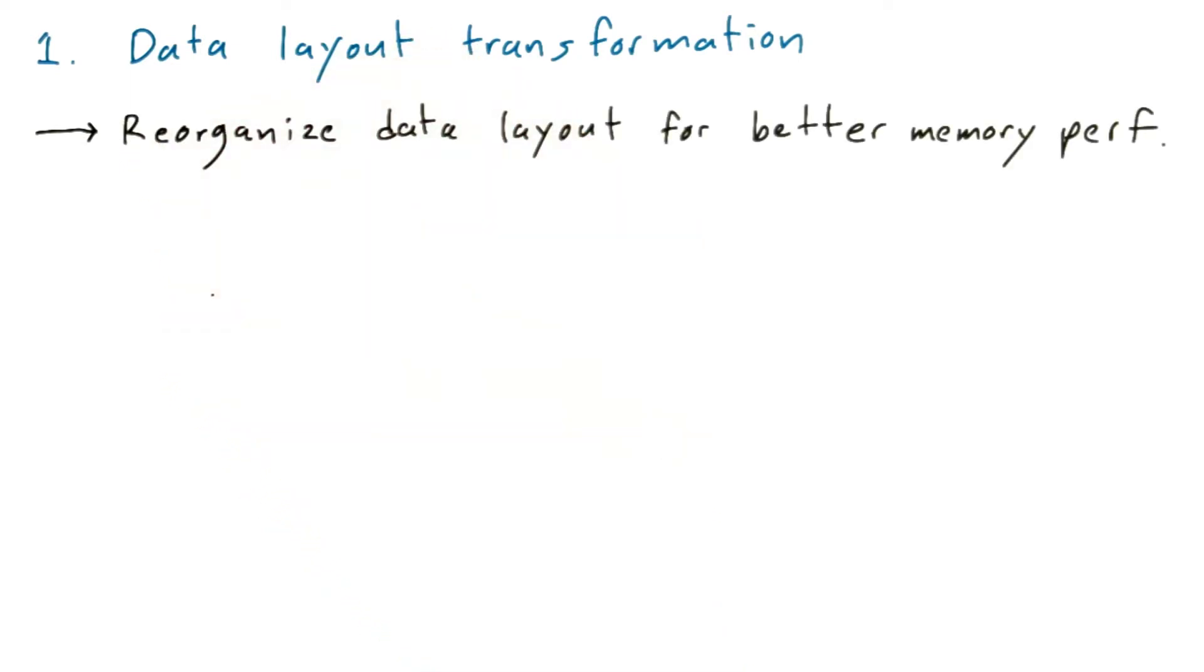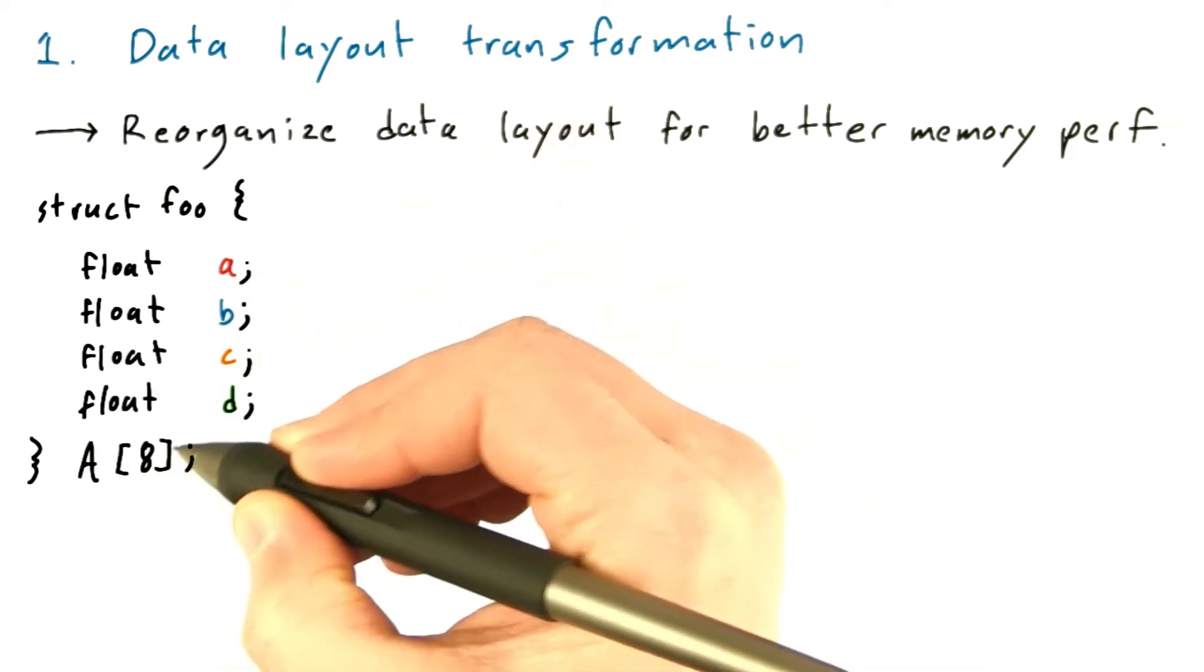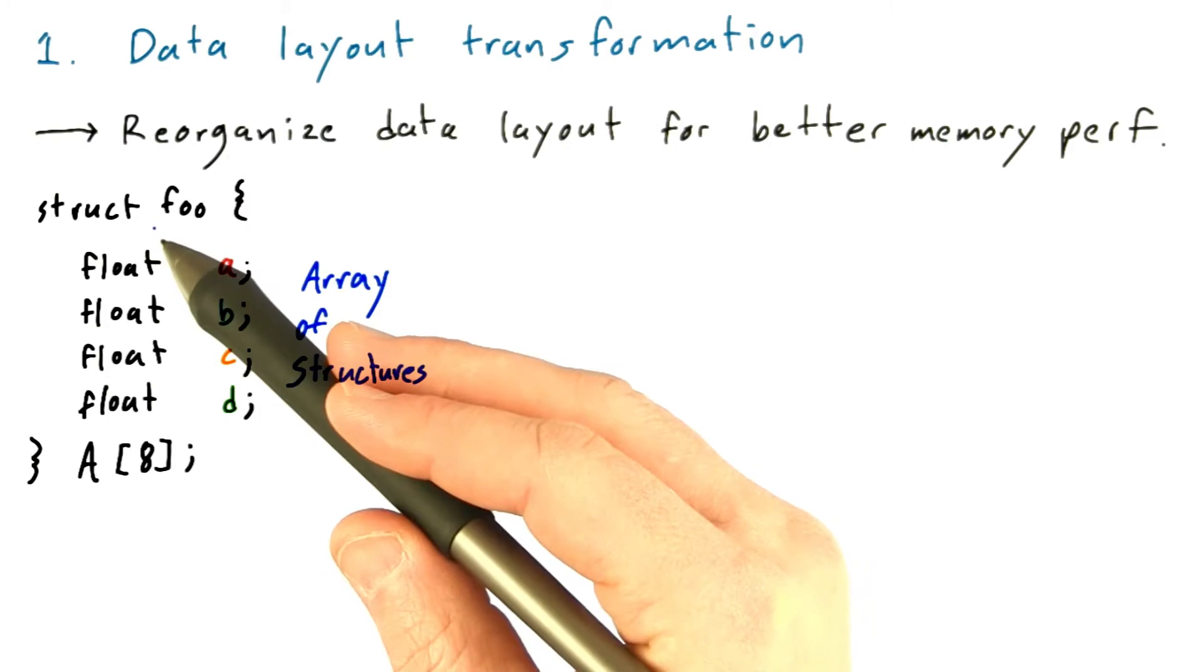A really common example of this data layout transformation is something we've seen before, where we take data which is laid out as an array of structures, like so, an array of structures.